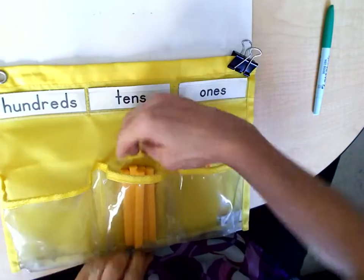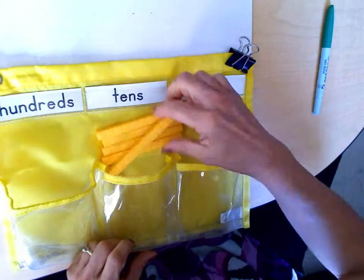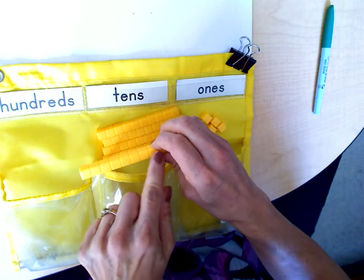We've got the tens place here and we've got our longs which equal ten. One, two, three, four, five, six, seven, eight, nine, ten.